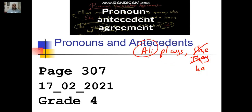The antecedent is the noun that the pronoun is going to replace. It has to follow in gender, in person, and in number. I have chosen she on purpose because it's not the same gender, so it's not going to agree. I have chosen they because it doesn't agree in number — we are talking about one person. We are talking about the third person, so we need to use he, which is singular and masculine. It agrees in number and in gender, so it's the perfect subject pronoun to replace Ali.